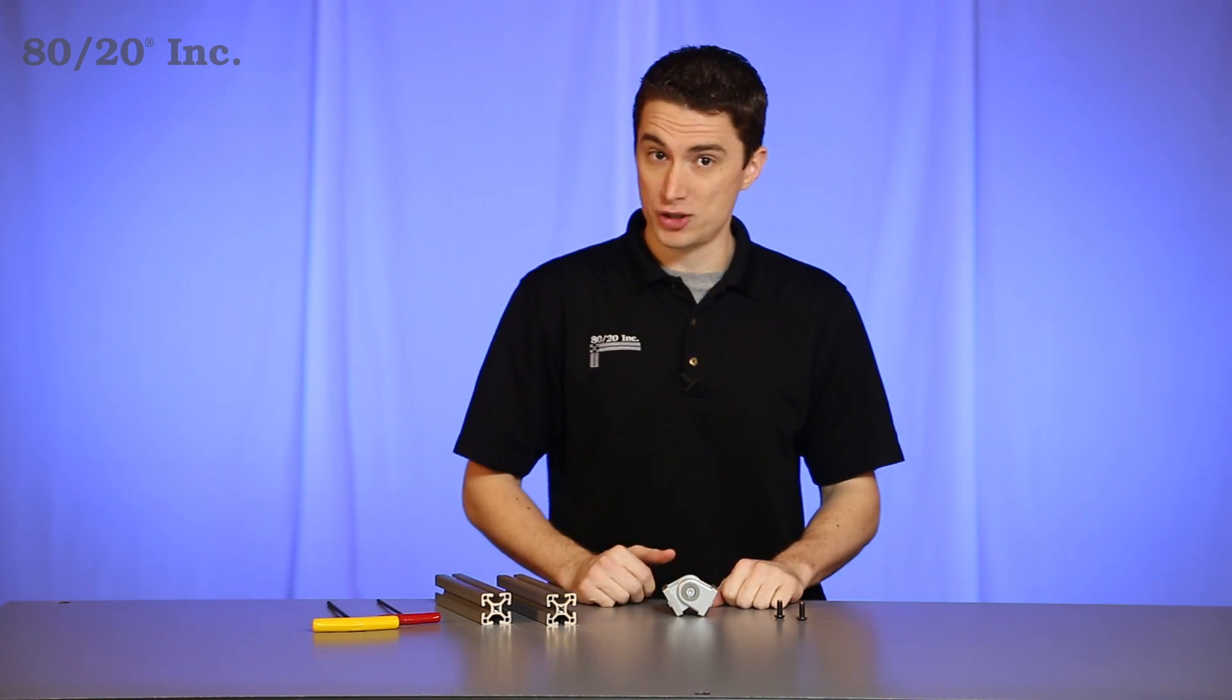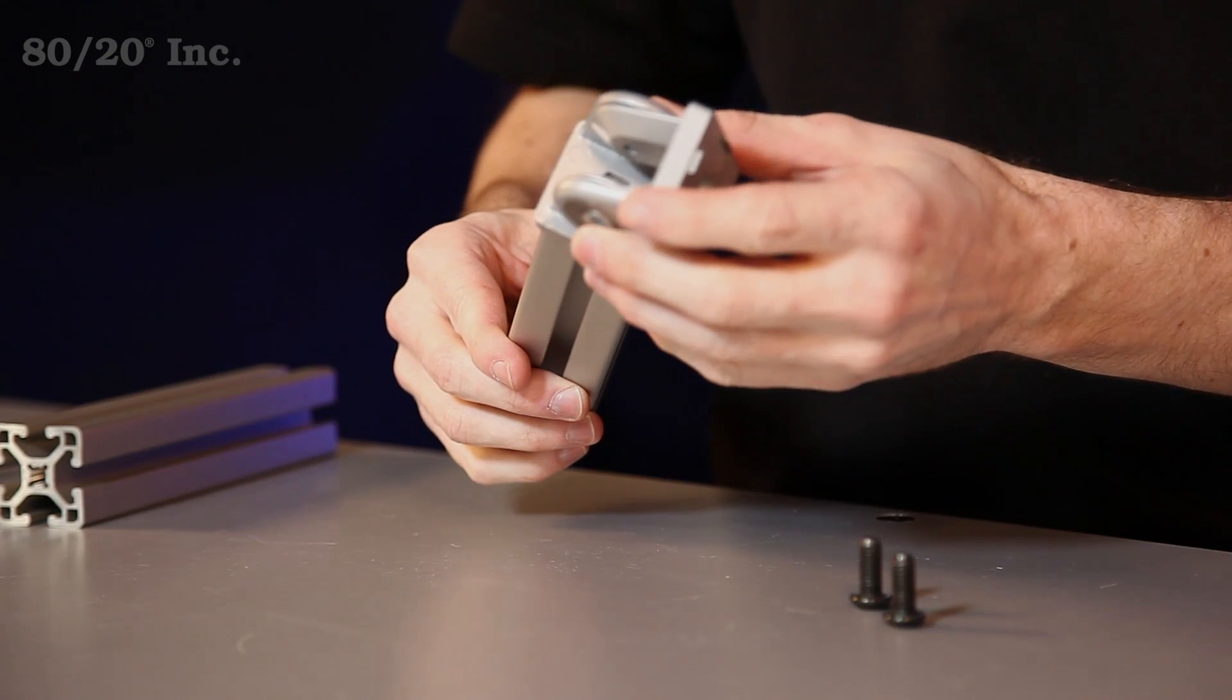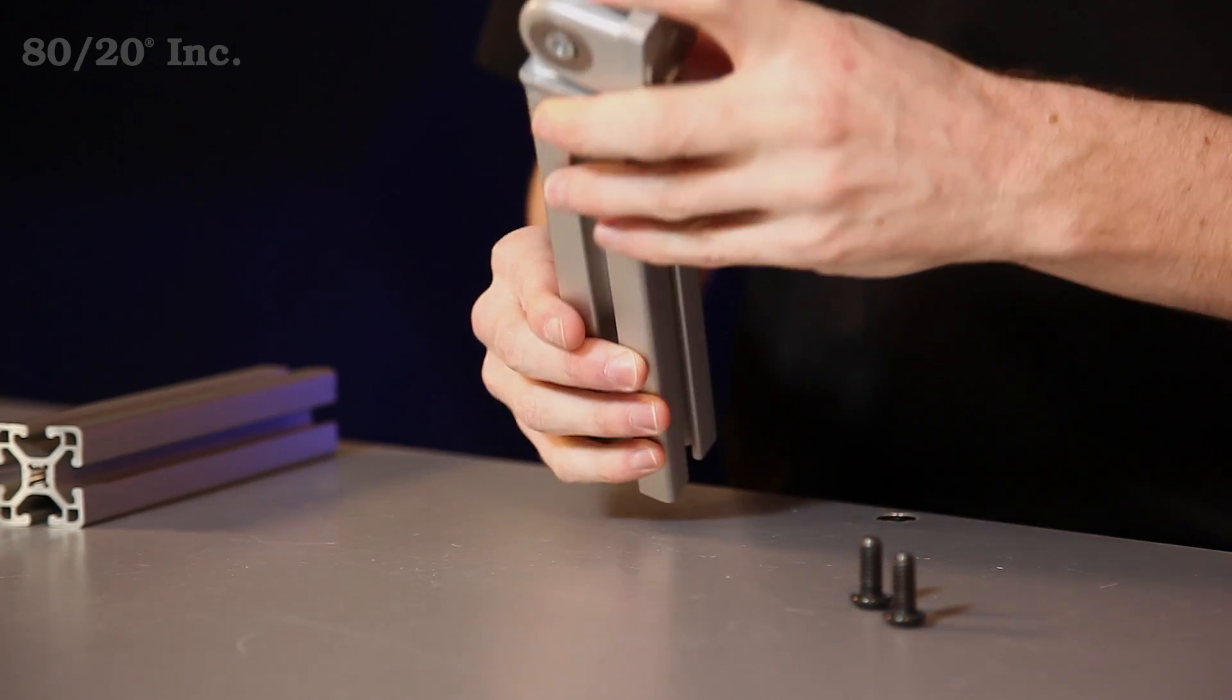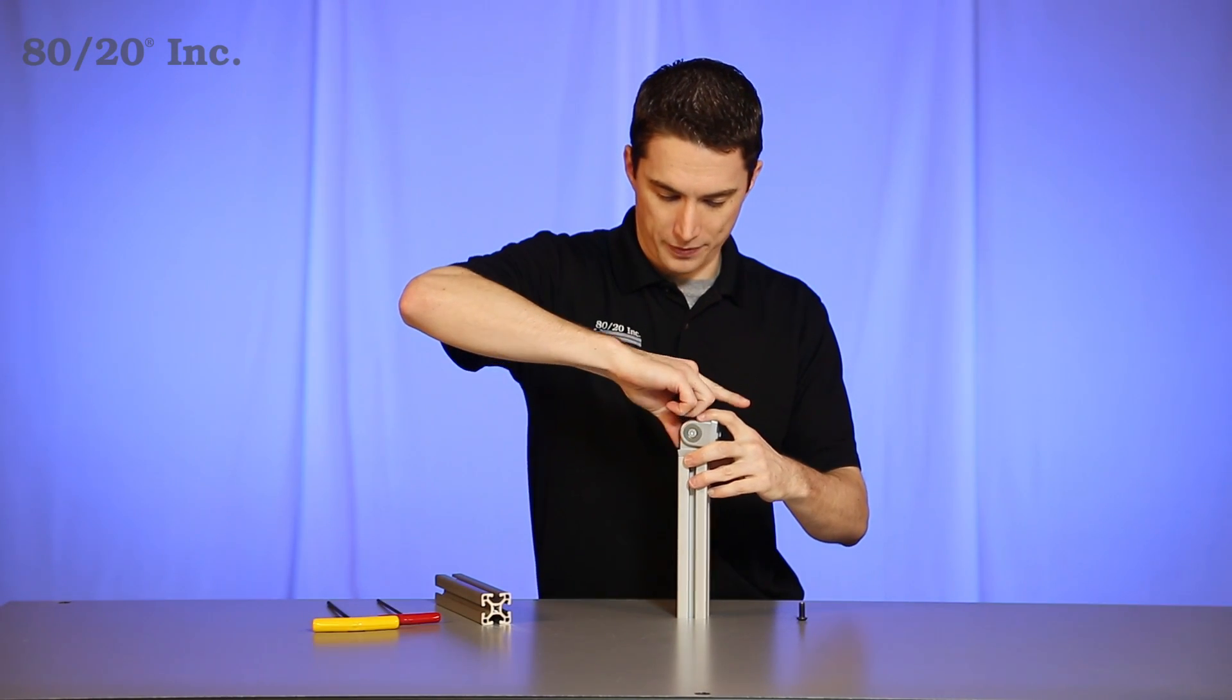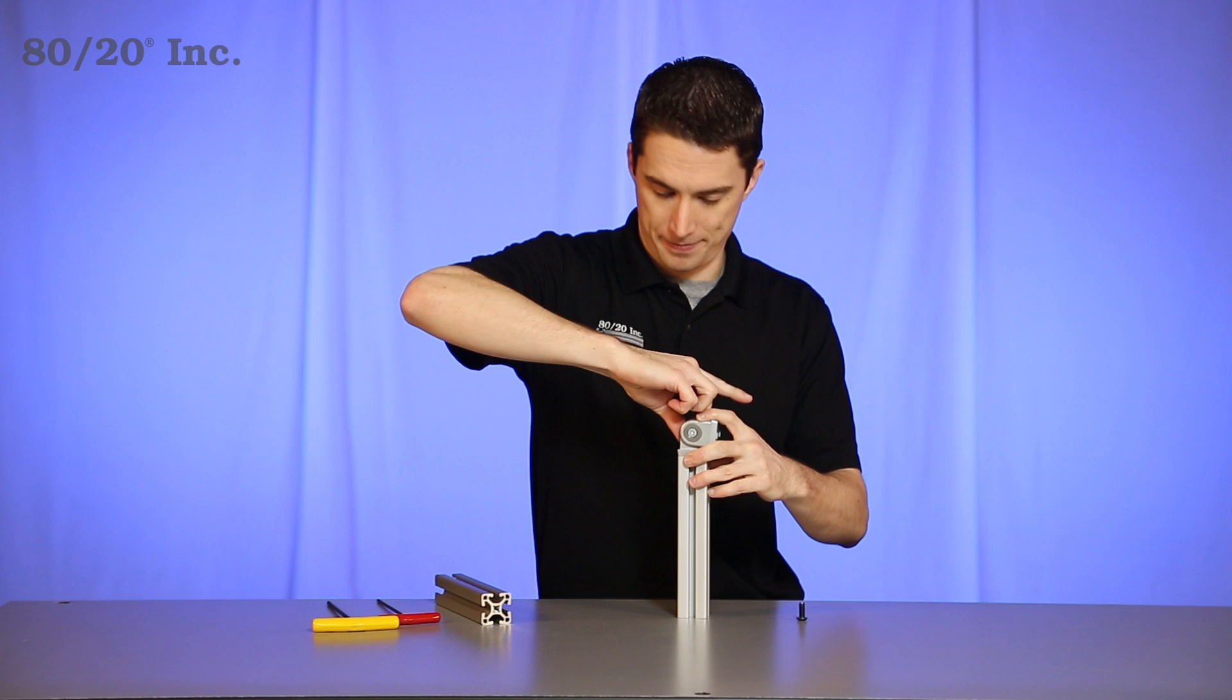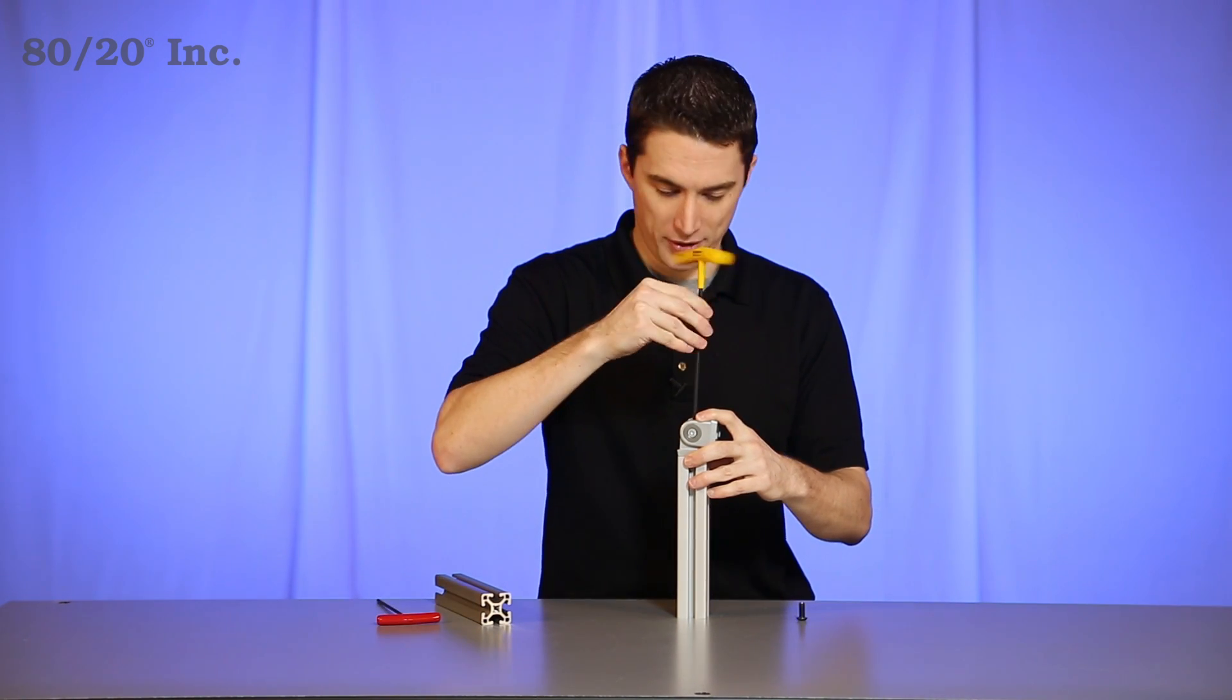When installing the pivot joint, you'll start with one end tap bar. Take your pivot joint and place it right over that end tap, hold it in place, take your bolt and feed it into the end tap, then grab a wrench and tighten down that half of the pivot joint.